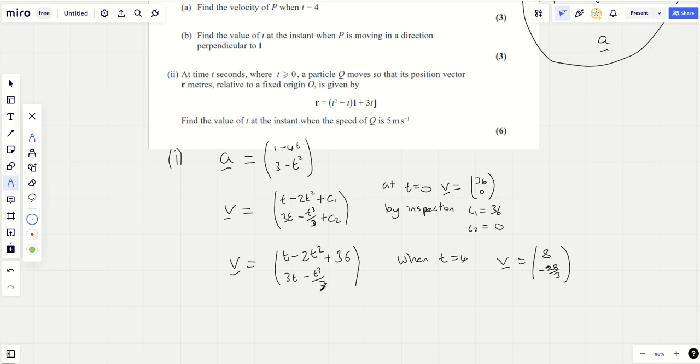63 over 3 is 21, so that's going to be 21 and a third. So 12 minus 21 and a third, that's going to be minus 9 and a third. It's actually minus 28 over 3. You've got 12, which is 36 over 3, minus 64 over 3, and that comes to minus 28 over 3. So there we go, that's the first bit.